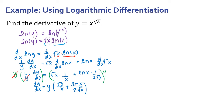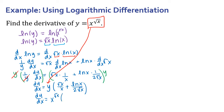Since I know what y is in terms of x, I can substitute it in to get everything in terms of x. So dy/dx equals x^(√x) times the quantity √x/x plus ln(x)/(2√x).